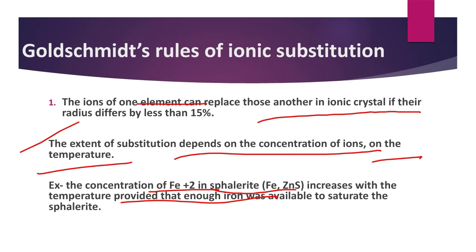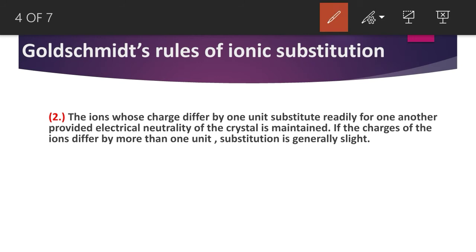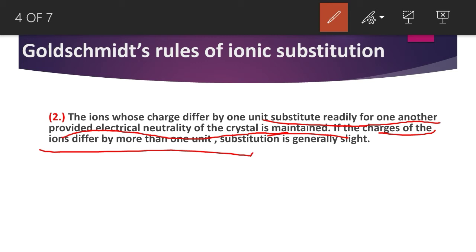The second rule is: ions whose charges differ by one unit substitute readily for one another, provided the electrical neutrality of the crystal is maintained. If we replace a one-positive ion with a two-positive ion, the stability will decrease because the crystal is no longer neutral. If the charges differ by more than one — such as one iron with +1 charge and another with +3, +4, or +5 — then substitution is generally slight or does not occur.